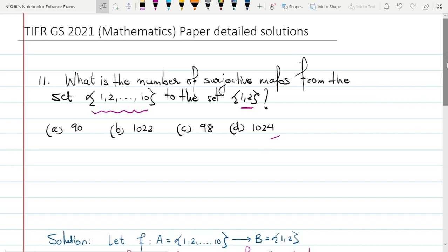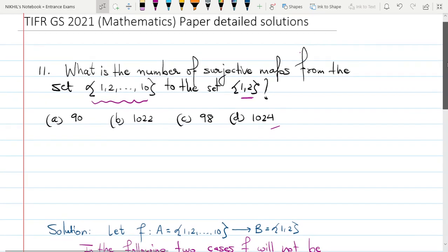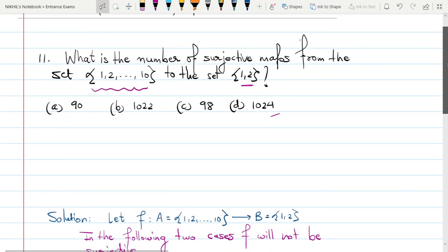So let's try to make this problem very simple in terms of two sets A and B. So if you try to see, here first I have written that my function f is defined from the set A, which is from 1, 2 till 10, to the set B consisting of 1, 2.